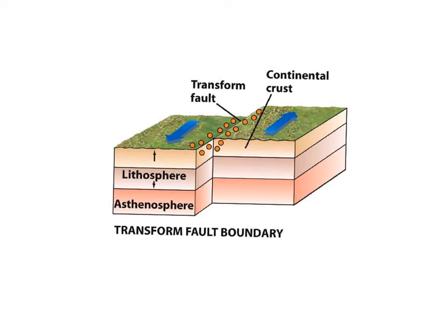Finally, the last boundary we learned about was the transform fault boundary. This is when the plates are moving past each other in opposite directions. When that happens, they tend to interlock and build up pressure. When they finally release from each other, that creates an earthquake — the shake that we feel. The longer the plates are pushing, the more pressure that builds, usually resulting in a stronger earthquake.